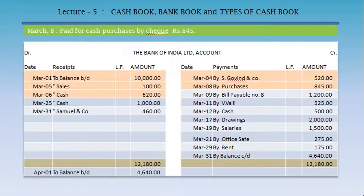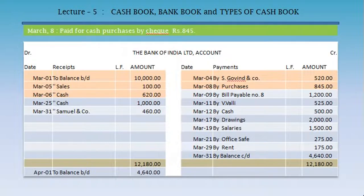Next transaction, March 8: paid for cash purchases by cheque, Rs. 845. Since it is a cheque payment, it is a bank transaction. To record this in the Bank of India account — it is a payment — we record it on the credit side: date March 8, by purchases, Rs. 845.